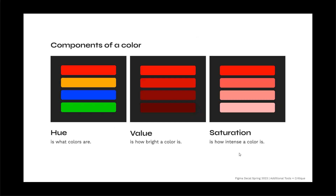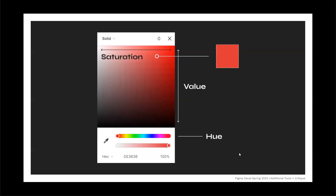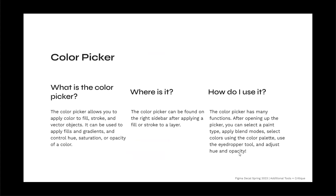There are three components of a color. The first is hue, which is what the color is. The second is value, which is how bright a color is. The third is saturation, which is how intense a color is. The color picker allows you to apply color to fill, stroke, and vector objects, and can control hue, saturation, and opacity. It can be found on the right sidebar after applying a fill or stroke to a layer.